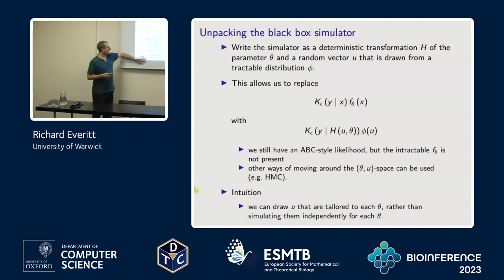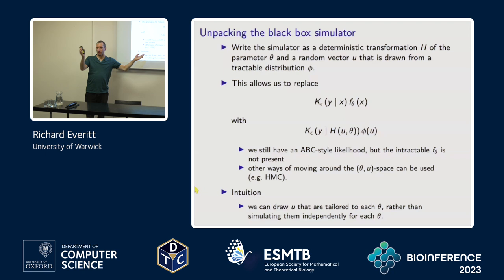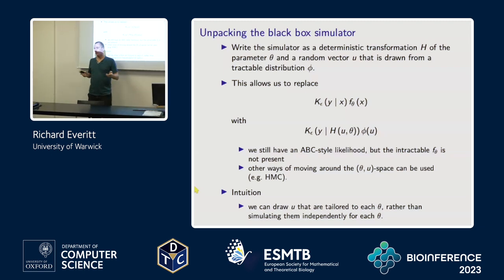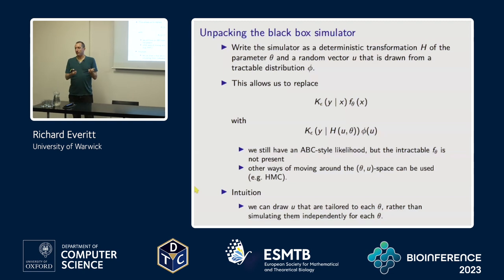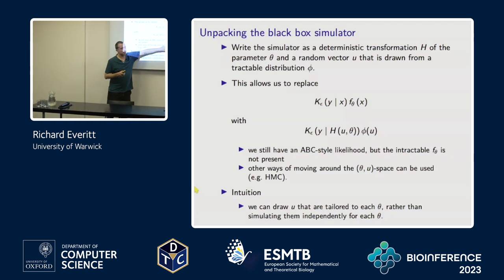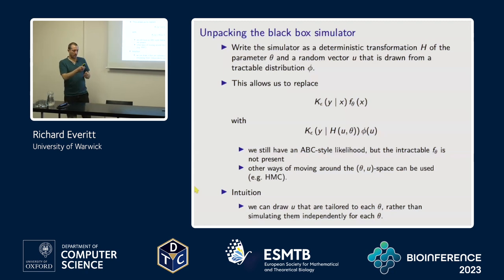Why might this help us? Let's think about the intuition. Before in ABC, we pick a theta and then we just simulate from the model and hope it works — independently for every theta. What we could do now is tailor the randomness that's in the simulator to the theta that we've drawn. You could think of schemes that update these things jointly and then maybe only update u sometimes, so you keep the good randomness that worked last time.